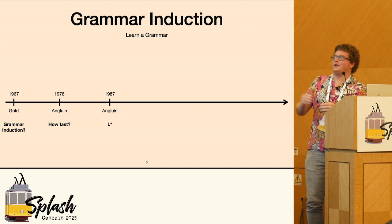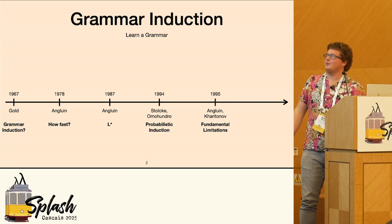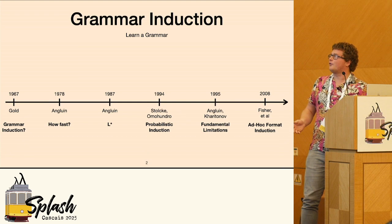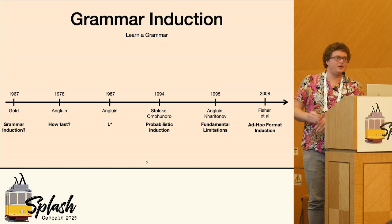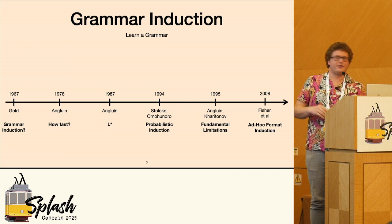And then there's been some follow-up work that does things like probabilistic induction — they discovered some limitations. There was eventually ad hoc format induction in the PADS project. And then since 2008, there's been a lot of recent cool work on using grammar induction for things like fuzzing, for things like profiles — a lot of really cool work.